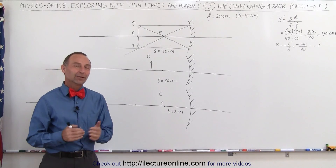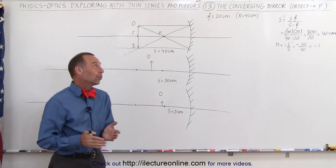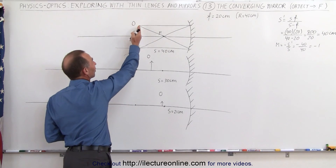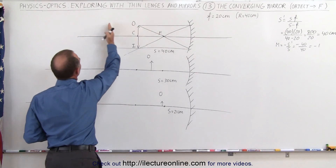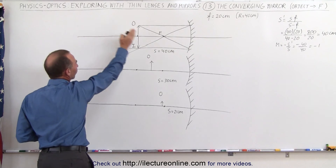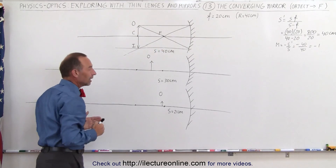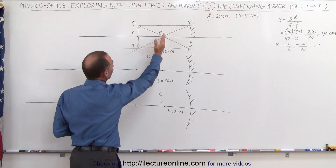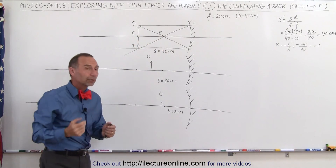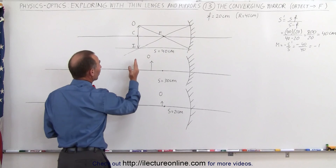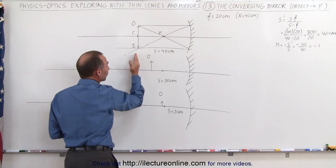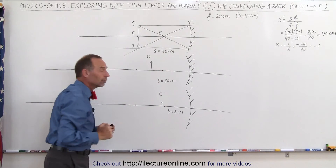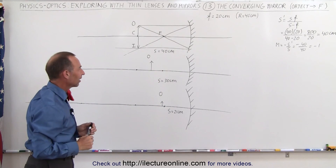Welcome to ElectronLine. In the previous video, we used a converging mirror. We started with the object at the center of curvature and moved the object back, away from the focal point and from the lens, to see what happened to the image. Now what we're going to do is move the object, starting from the center of curvature, and move it closer to the mirror, or closer to the focal point, and see what happens to the image this time.